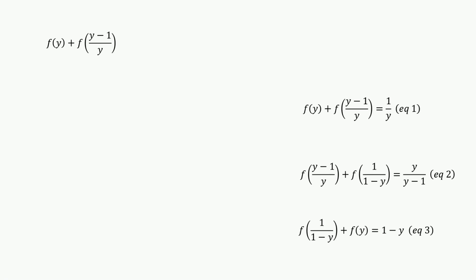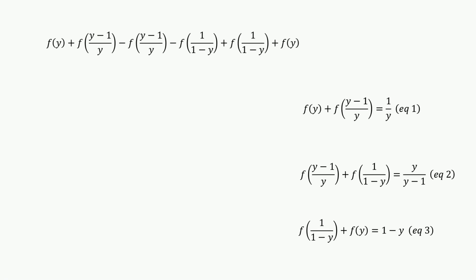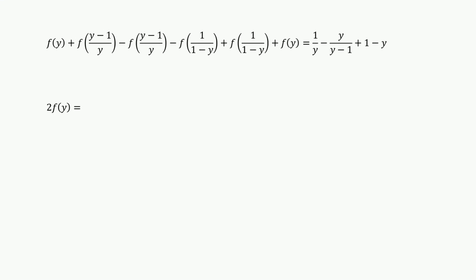That is, f of y plus f of (y minus 1) over y minus f of (y minus 1) over y minus f of 1 over (1 minus y) plus f of 1 over (1 minus y) plus f of y equals 1 over y minus y over (y minus 1) plus 1 minus y. Simplifying the left-hand side, we get 2 f of y.